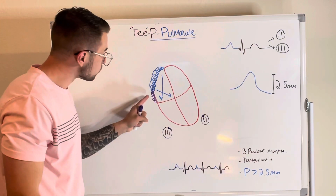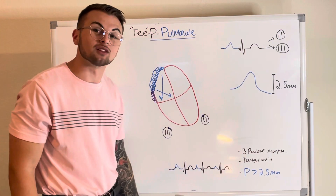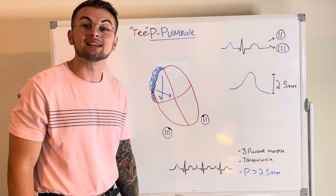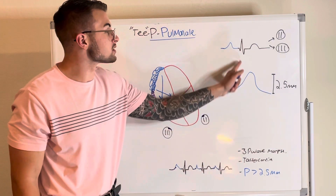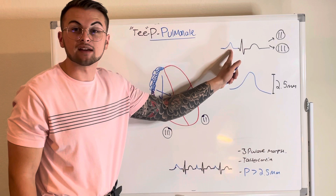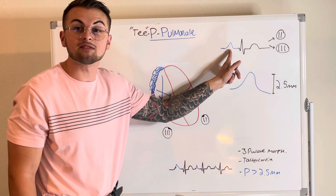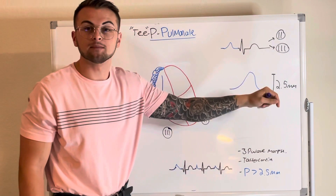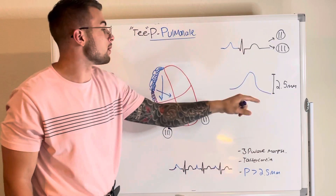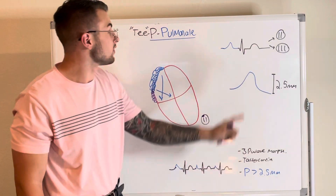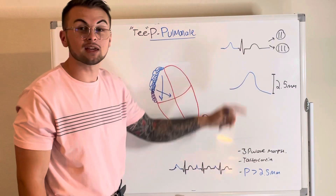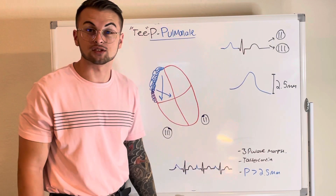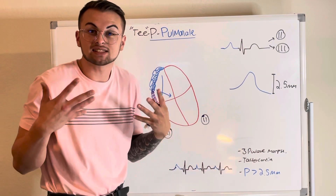Put them together and you have P waves that indicate right atrial enlargement. The criteria for P Pulmonale is defined as peaked P waves that are greater than 2.5 millimeters in limb leads 2 and 3. Remember 2.5 millimeters — think P waves that are greater than 2.5 small squares.